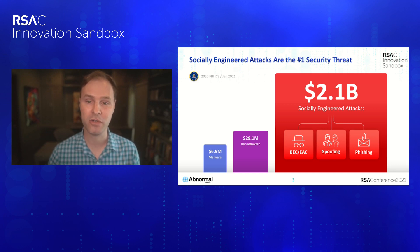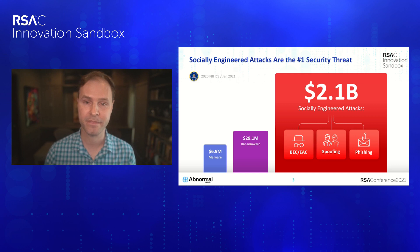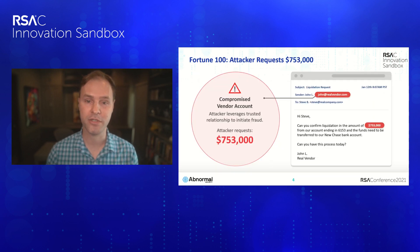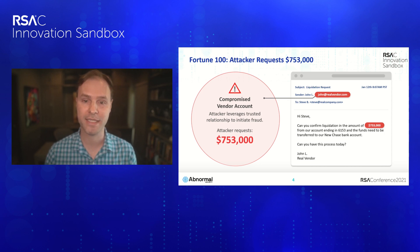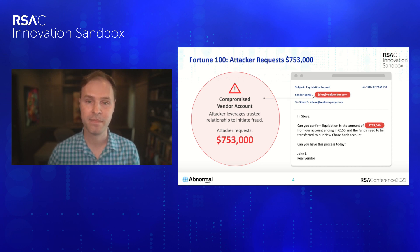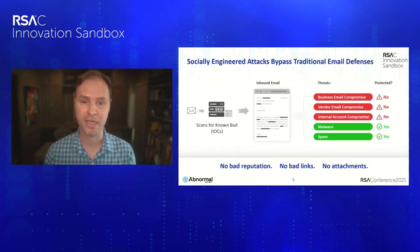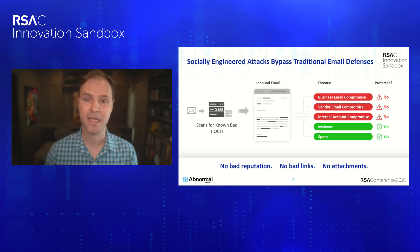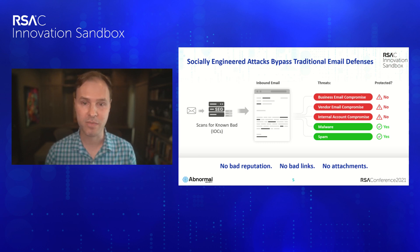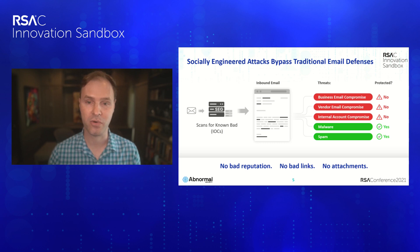Similar to SolarWinds, if you look at the true source of the Colonial Pipeline attack, you'll see it all started with a single spear phishing email. Here's an example from a Fortune 100 customer: the attacker has compromised a known vendor and is leveraging implicit trust and online identities to steal money. The reason this attack bypasses conventional email security is there are no known bad signals — it's sent from a trusted account with no bad reputation, no links, and no bad attachments.